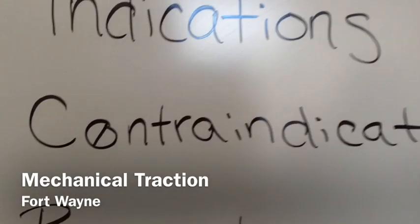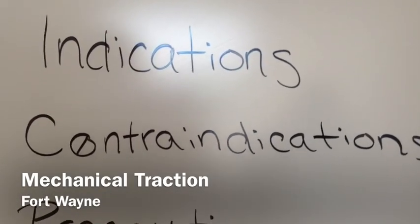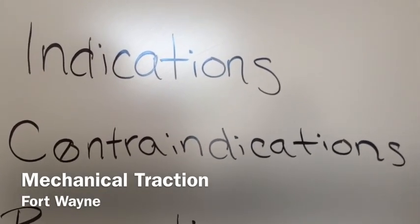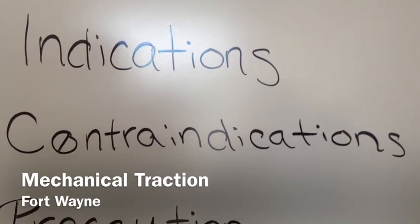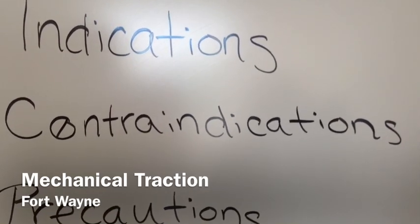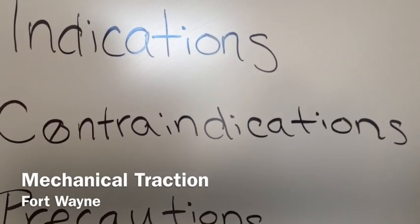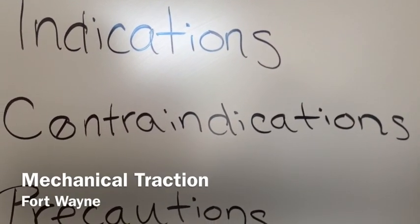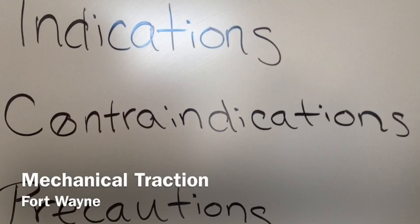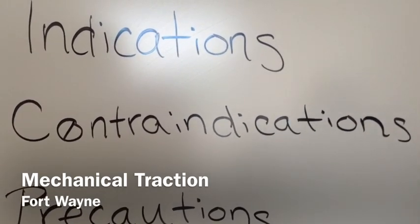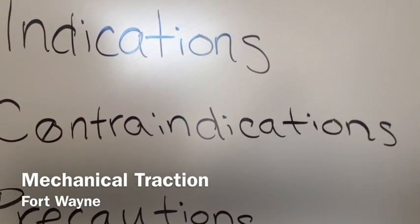Contraindications — that means don't do it: unstable spine, diseases affecting vertebrae or spinal cord including cancer or meningitis, vertebral fractures, extruded disc fragmentation, spinal cord compression, conditions in which flexion and/or extension are contraindicated, or osteoporosis.